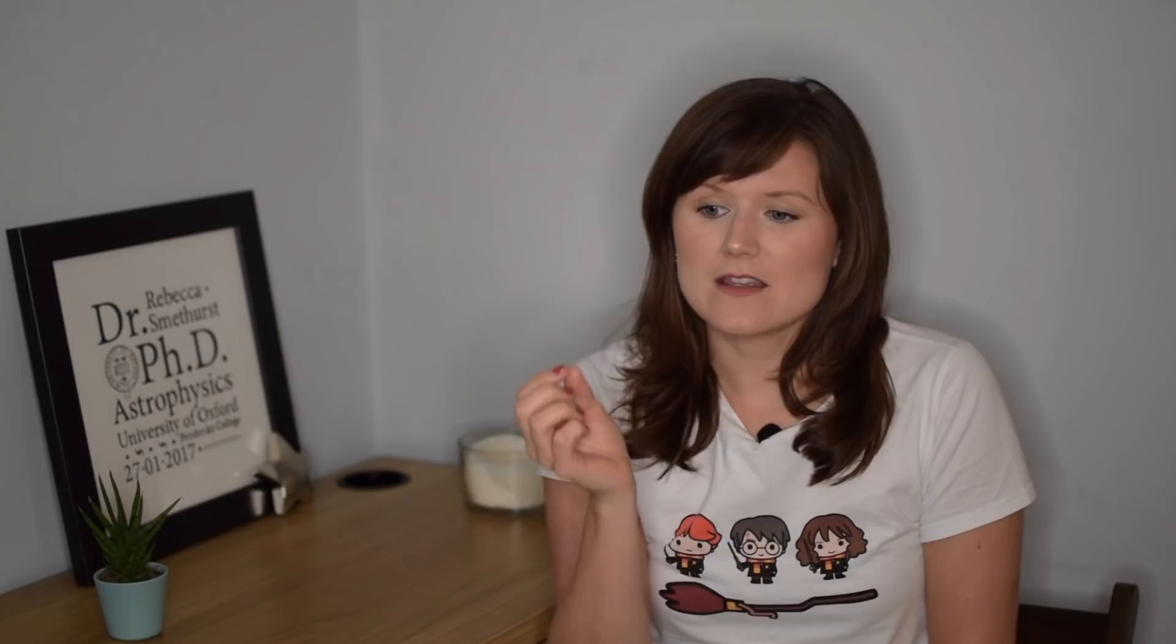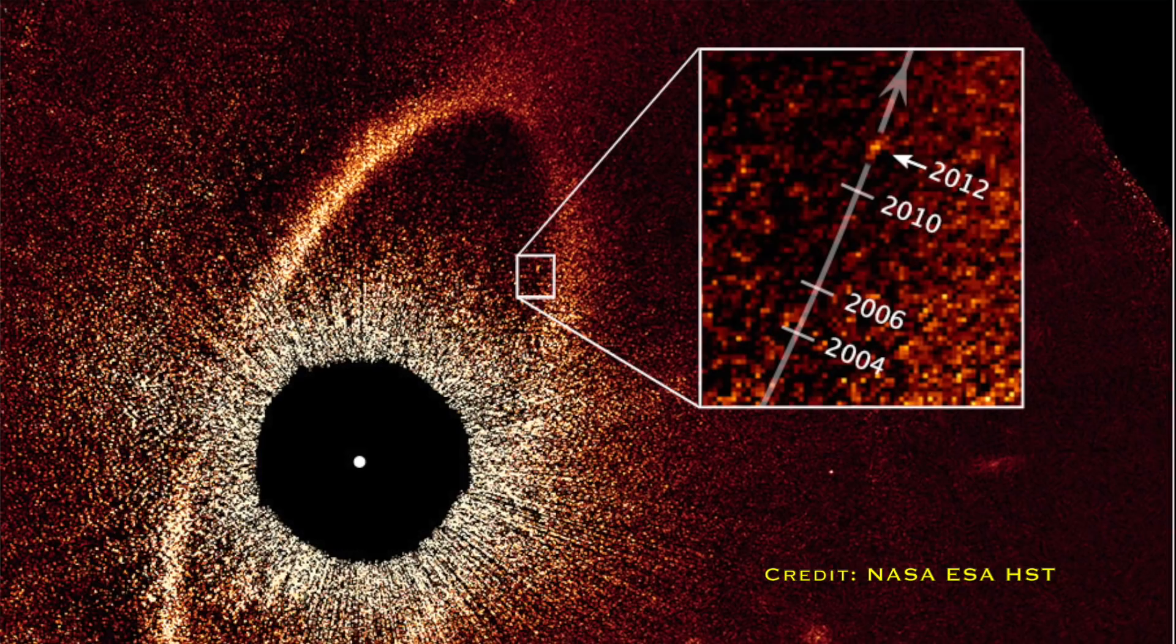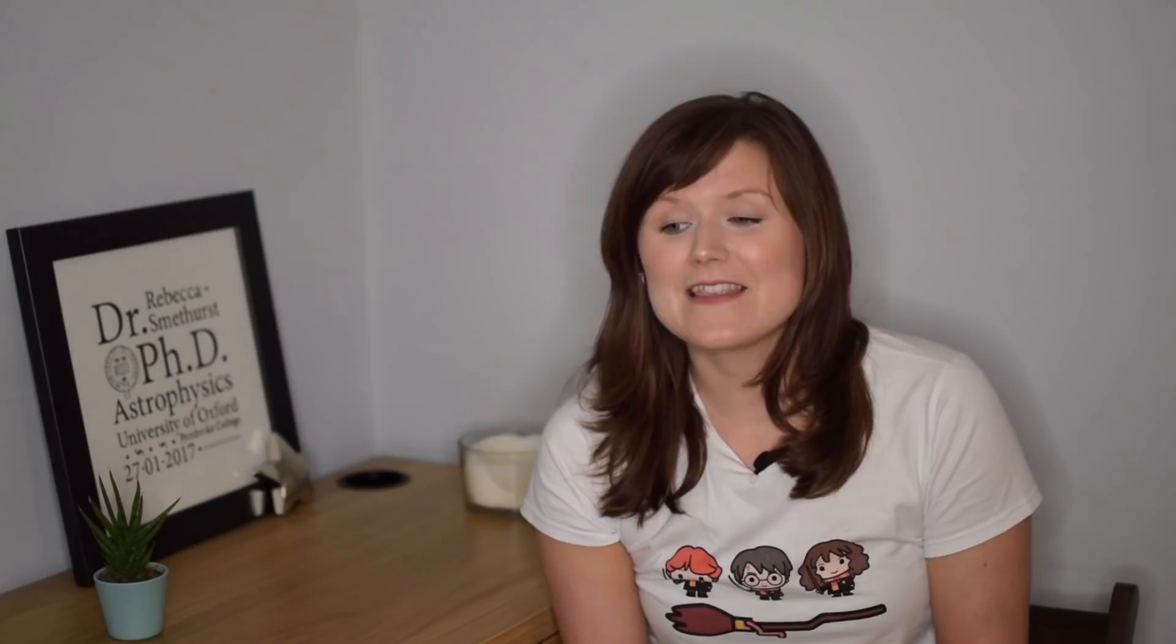It is momentous in its achievement. The fact that they've been able to detect something that is so faint, it doesn't give out light of its own, it's only reflecting its star's light next to this blindingly bright star is incredible. And the Hubble Space Telescope has gone back to that star and done the exact same thing and found it's moved even further around its orbit since we last observed it.